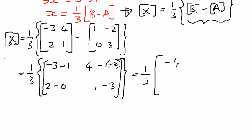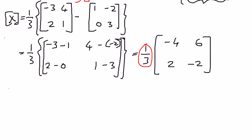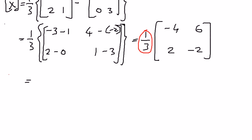Now we need to distribute the scalar 1 over 3 to every element inside the matrix. So: 1 third times negative 4 is negative 4 over 3; 1 third times 6 is 6 over 3; 1 third times 2 is 2 over 3; and 1 third times negative 2 is negative 2 over 3.